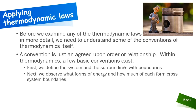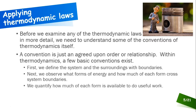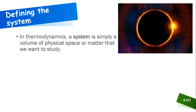We quantify how much of each energy form is available to do useful work, and then we can solve whatever equations we need to find missing variables. These are the basic conventions for our journey into thermodynamics. A system is simply that volume of physical space or matter that we want to study.